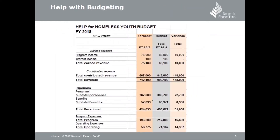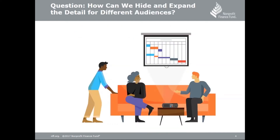We've been working on a variety of different budgeting techniques and best practices, and we're going to continue that through the blog series. But Jordan asked a question: how can we hide and expand the detail for different audiences? What she means is that she has one budget but she doesn't want to create one budget for her program staff, one for her board, and another for funders. She really just wants to use one budget.